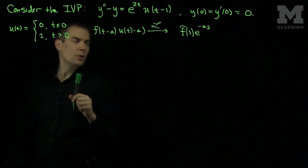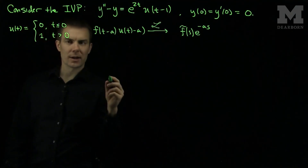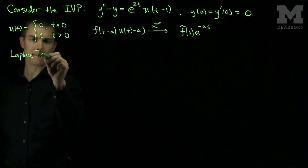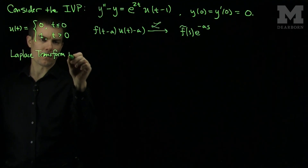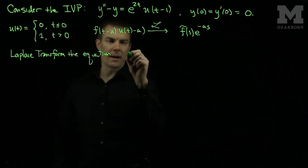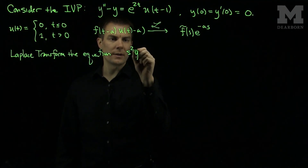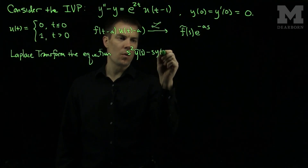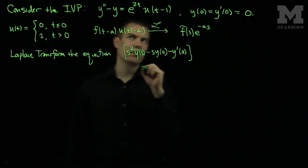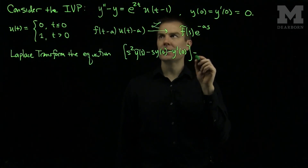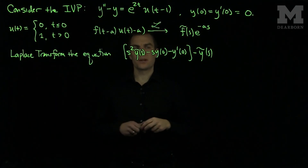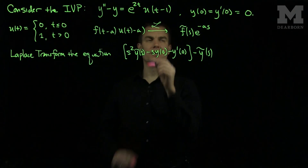To solve this initial value problem by Laplace transform, we transform our equation to get s squared times y-tilde of s minus s times y of zero minus y prime of zero, minus the Laplace transform of y. Now we need to figure out how to take the Laplace transform of e to the 2t times u of t minus 1.